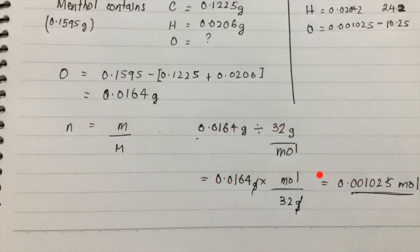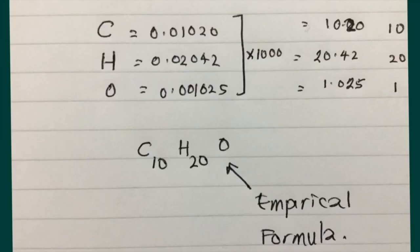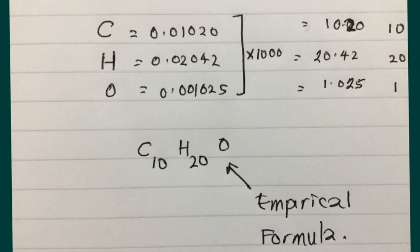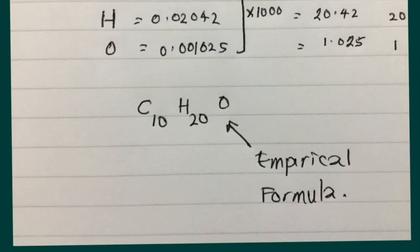You get the number of moles of oxygen, and once you have moles of each element in the sample, you look for the simplest whole number ratio. Multiplying each value by 1000 to make inspection easier, you get values that come to an approximate ratio of 10:20:1 — ten carbons, twenty hydrogens, and one oxygen. This is the empirical formula of menthol: the simplest whole number ratio of C:H:O.